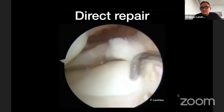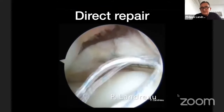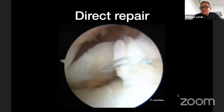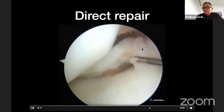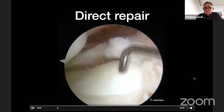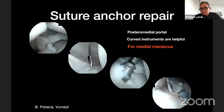Direct repair is possible — in one lateral meniscus root tear case that was still far enough from the bone attachment with residual tissue, I could do a classical all-inside repair. We can also use suture and anchor repair. As shown in a video by Boris Pobaraj published on Vumedi, a posterior medial approach portal allows direct fixation with an anchor — similar to what we do for cuff tears or shoulder instability. This is possible for the medial meniscus, but for the lateral meniscus the attachment is quite posterior, making it much more challenging.